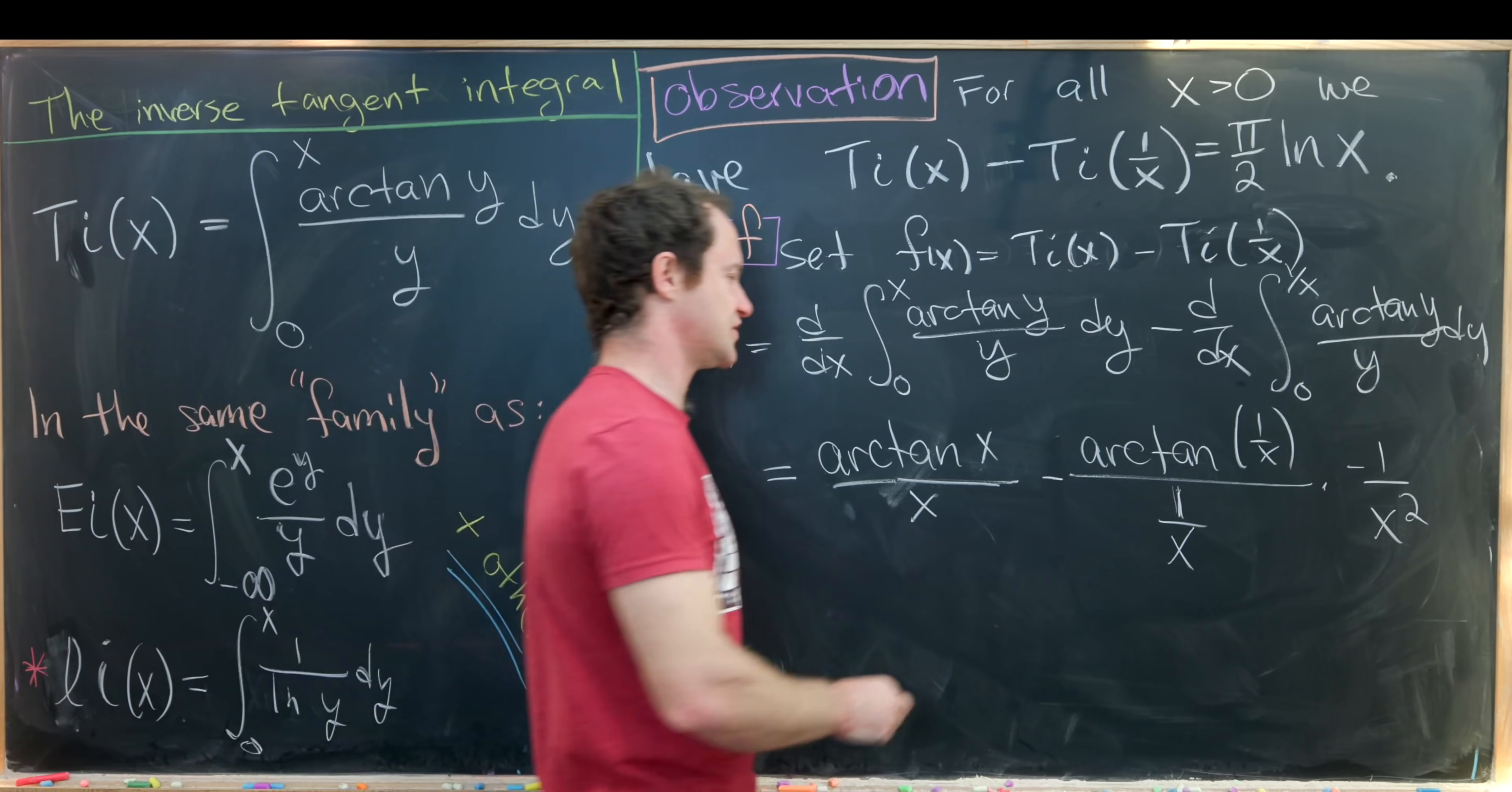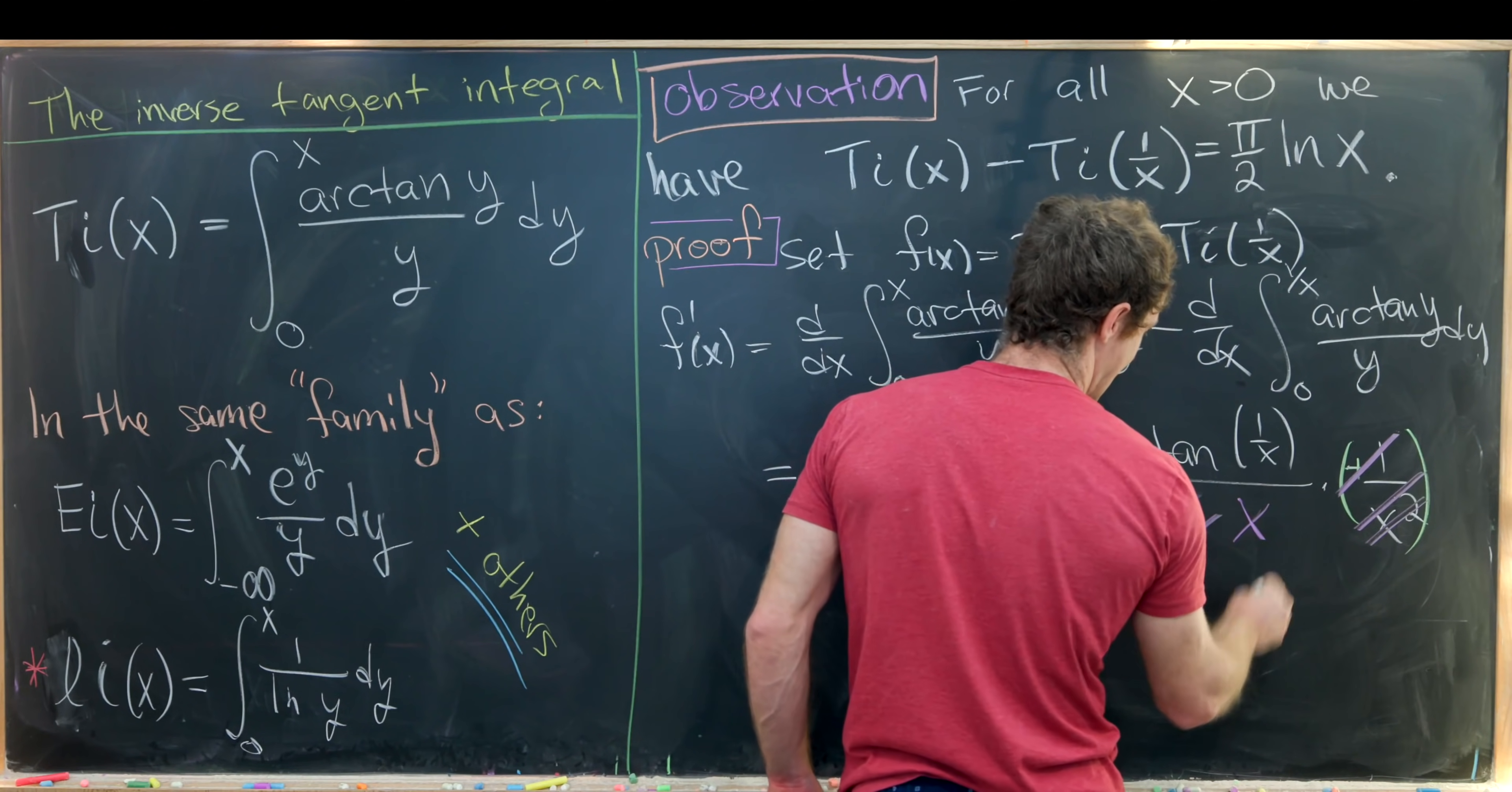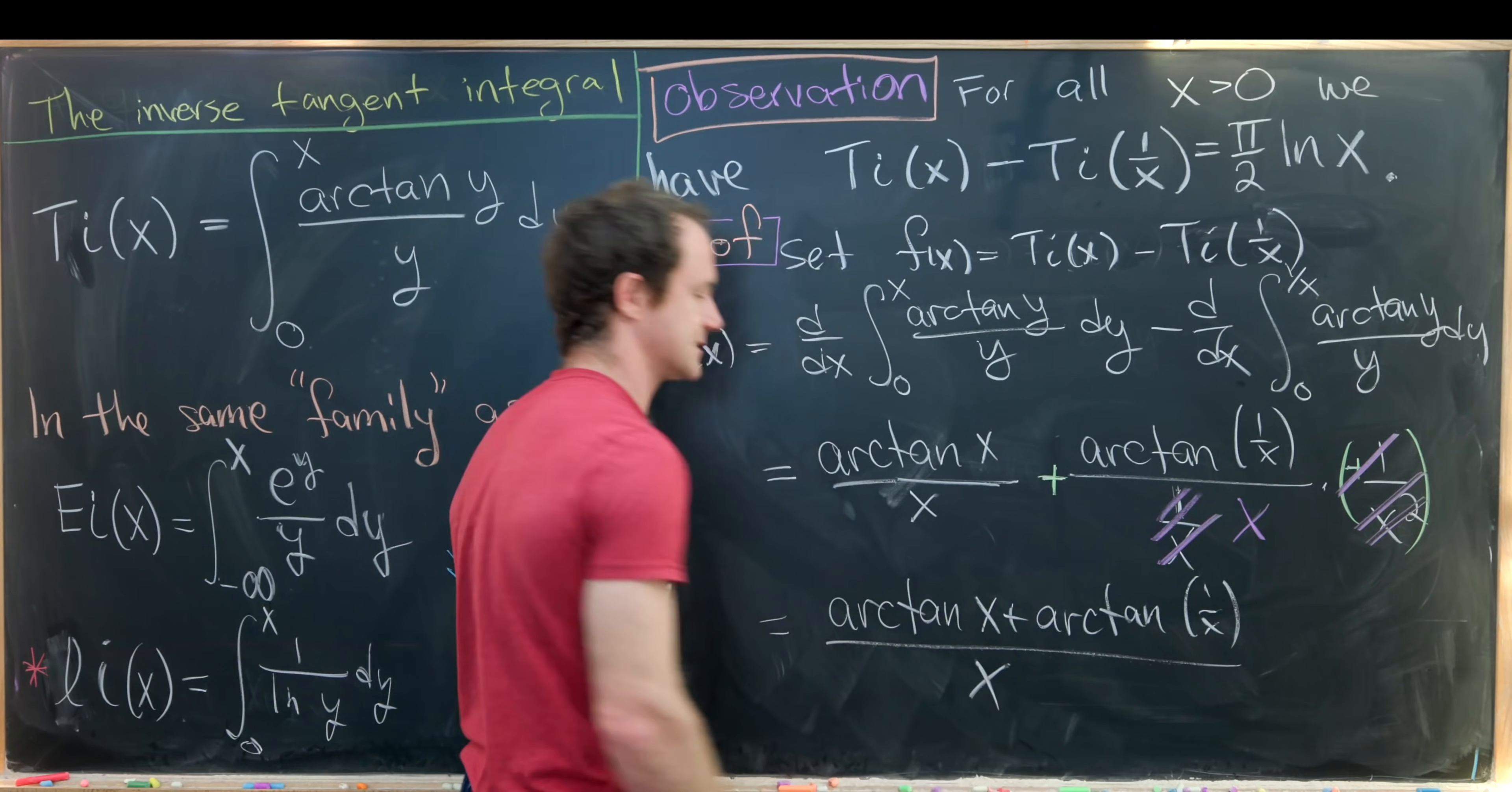So now let's look at some simplification that occurs. This minus sign will turn into a plus sign by canceling that minus sign out. And then furthermore this x squared will distribute through here and leave us with an x in the denominator. But now we have a common denominator and we can write this as the arctan of x plus the arctan of 1 over x over x like that.